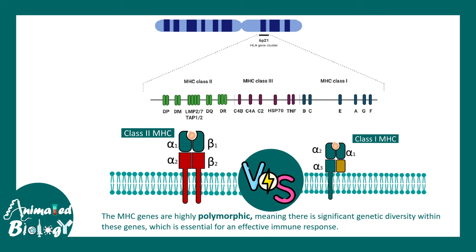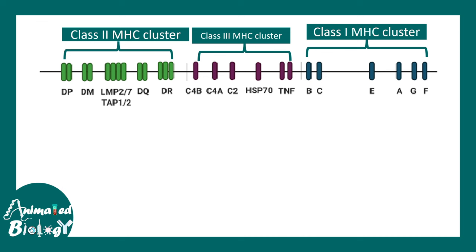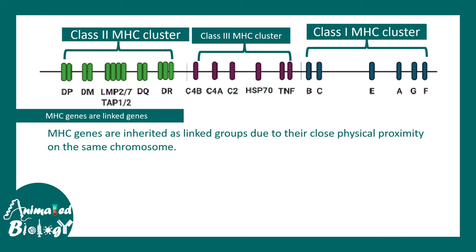It's important to note that MHC genes are highly polymorphic, meaning there is significant genetic diversity within this gene in a population. This is how the overall cluster looks — this is an oversimplified diagram. The major players in class 1 MHC are A, B, and C, and the class 2 MHC major players are DP, DM, and DR.